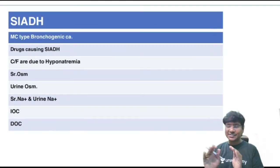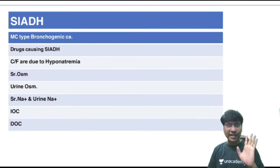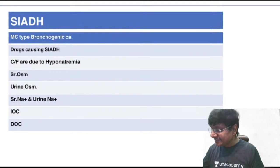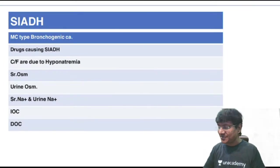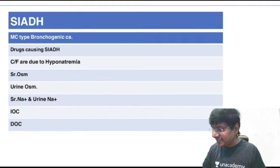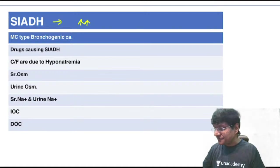After ADH deficiency — diabetes insipidus — let's discuss SIADH: Syndrome of Inappropriate Antidiuretic Hormone, where there is excessive production of antidiuretic hormone. Normal serum osmolality is 285 to 295, and normal urine osmolality is around 300 to 1000 milliosmol.